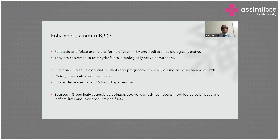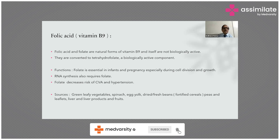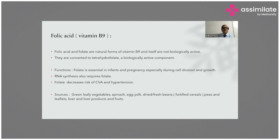Folic acid deficiency — vitamin B9. Folic acid and folate are natural forms of B9 and are not biologically active themselves; they are converted to tetrahydrofolate, the biologically active component. The function of folic acid: it is essential in infancy and pregnancy, especially during cell division and growth, and is also important for RNA synthesis. When folate decreases, risk of cerebrovascular accident and hypertension increases. Sources of folic acid include green leafy vegetables, spinach, egg yolk, dried beans, fortified cereals, peas, leaflets, liver, liver products, and fruits.